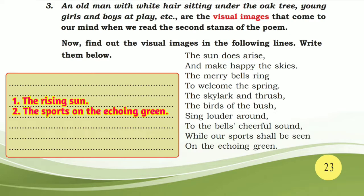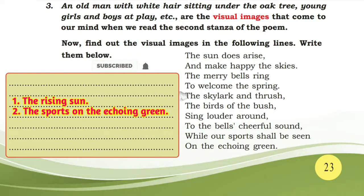Now find out the visual images in the following lines and write them below. That's what we call visual images. 'That's why our sports shall be seen on the echoing green.' The sports on the echoing green — that is why we call them visual images.